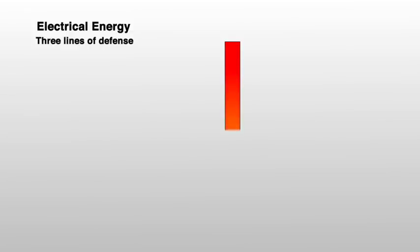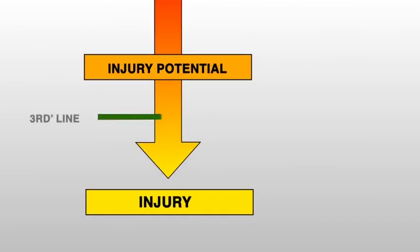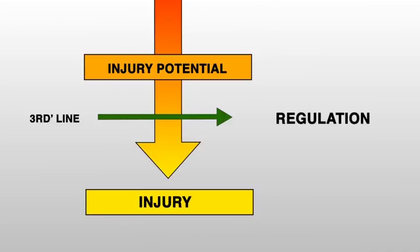For personal safety, most industrial companies define for the operation of their electrical switchgears three lines of defense to avoid accidents caused by the hazardous potential of electrical energy. The third line is regulation using special wear and devices and following related safety rules.